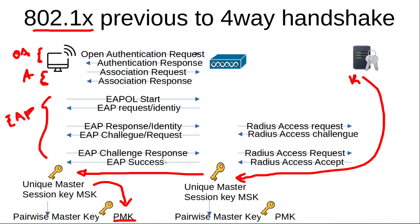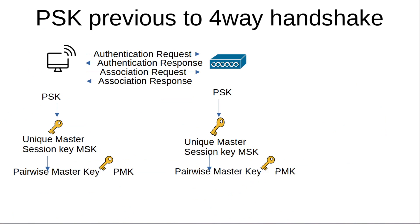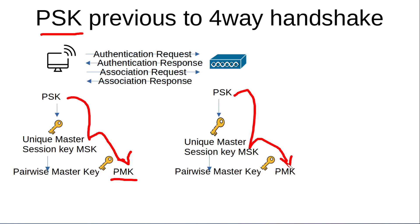The end device will use the unique master session key, or MSK, to generate the pairwise master key, or PMK, that is the basis of the four-way handshake. The access point will do the same — it will use the MSK to generate a PMK. If you're configuring WPA or WPA2 personal mode, you will be using a pre-shared key, and this pre-shared key will be used by both the end device and the access point to generate the pairwise master key, or PMK, that is the basis of the four-way handshake.